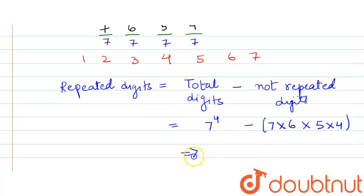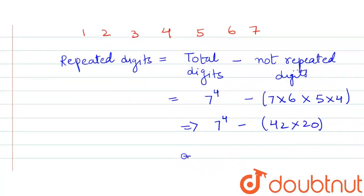So after solving this, we get 7 raised to the power 4 minus 42 into 20, which is equals to 7 raised to the power 4 minus 840. So this is the final answer.